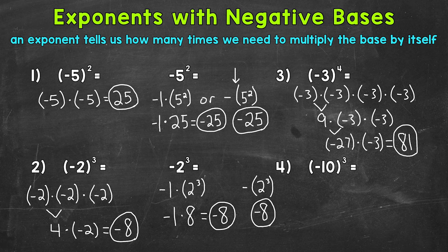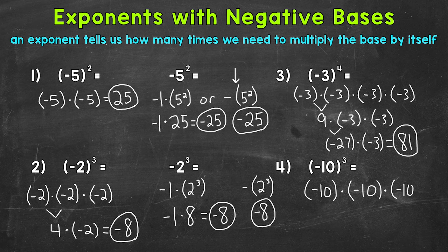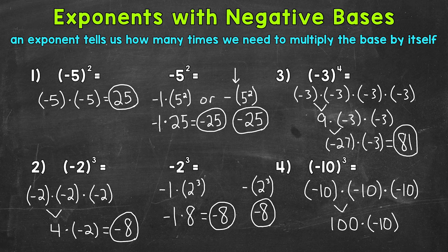Lastly, let's move on to number 4, where we have negative 10 cubed, and our negative 10 is within parentheses. So this means negative 10 times negative 10 times negative 10. Negative 10 times negative 10 — a negative times a negative equals a positive — so this is a positive 100. Then we have times negative 10: a positive times a negative gives us a negative. 100 times negative 10 equals negative 1,000, and that is our answer.